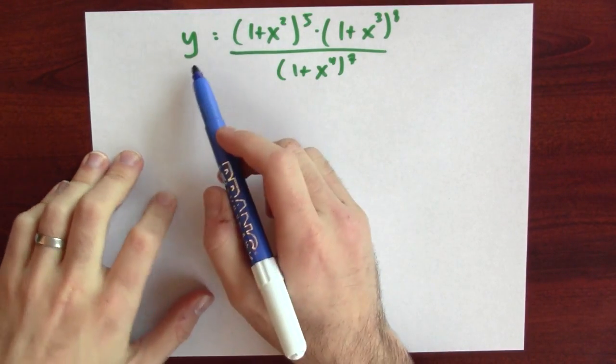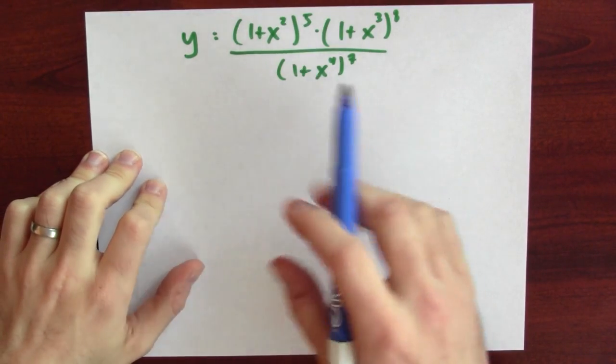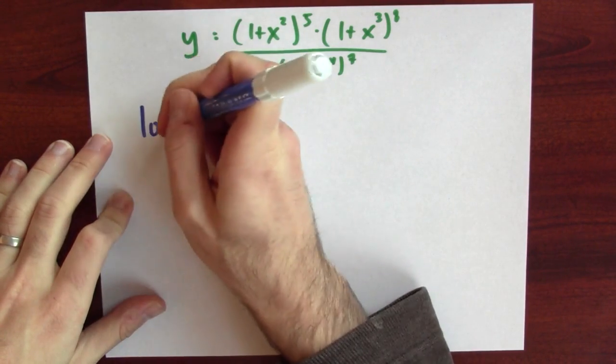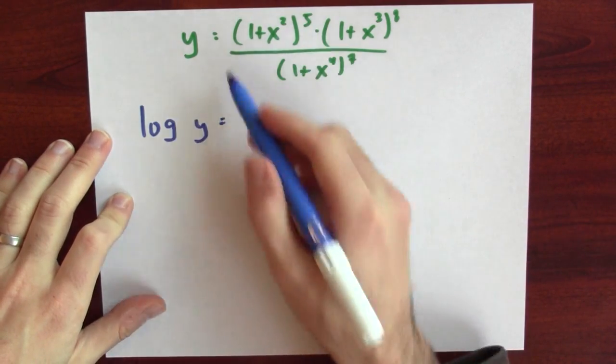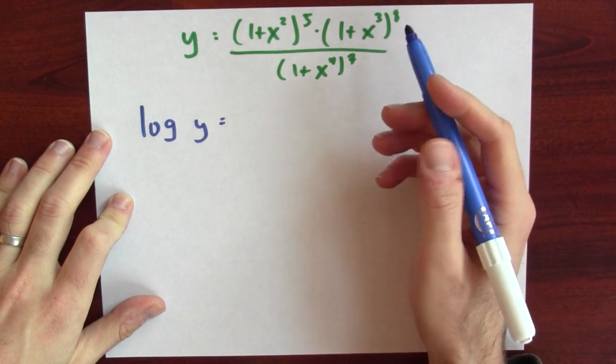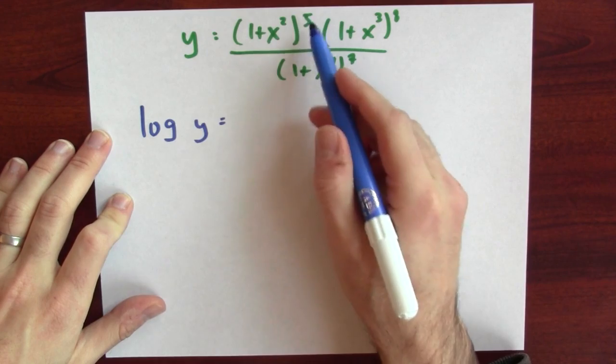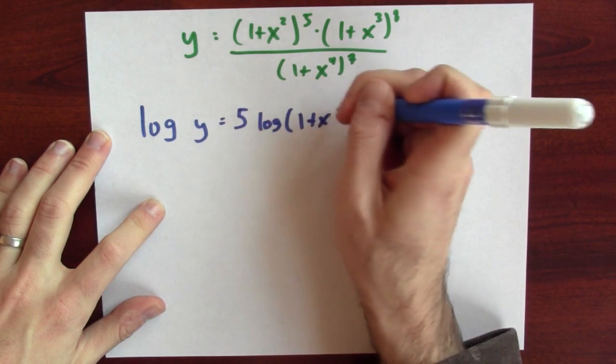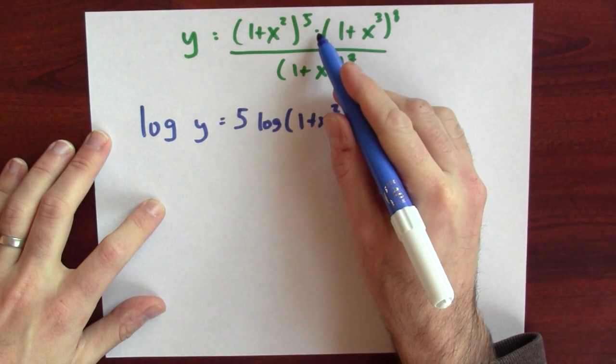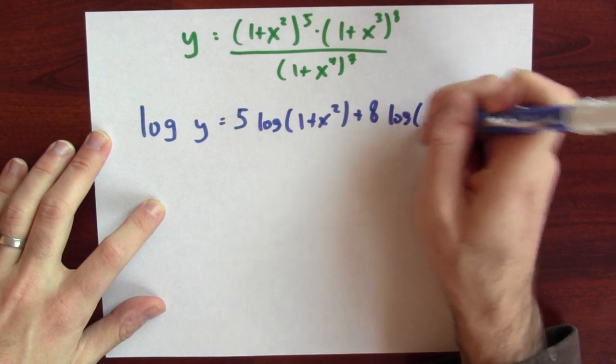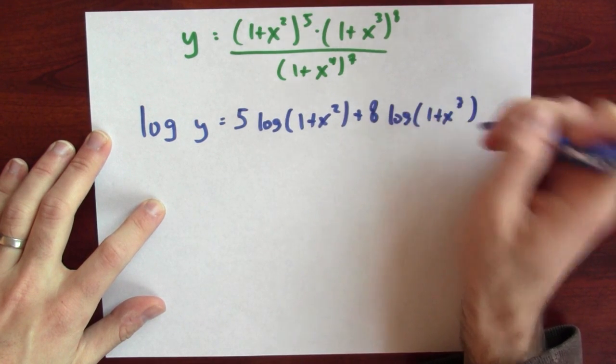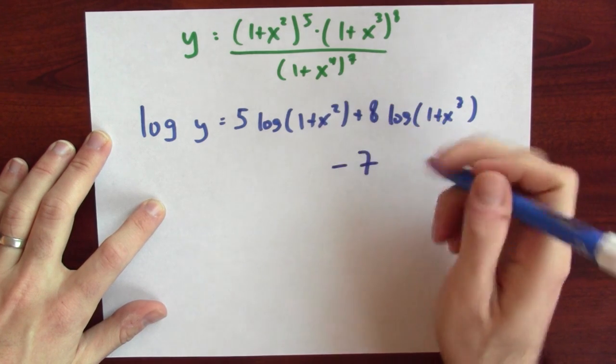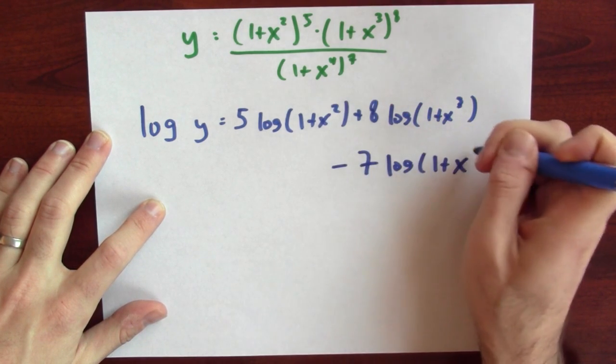Instead of calling this function f(x), I'm just going to call it y, because I'm getting ready to do implicit differentiation. I'm going to first apply log to both sides. And I'll get log y. What's log of the other side? Well, it's log of a quotient, which is a difference of logs, and logs of things to powers, which is that power times log of the base. So this works out to 5 log(1 + x²) plus, as log turns multiplication into addition, 8 log(1 + x³). And this quotient becomes a difference, so minus 7 log(1 + x⁴).